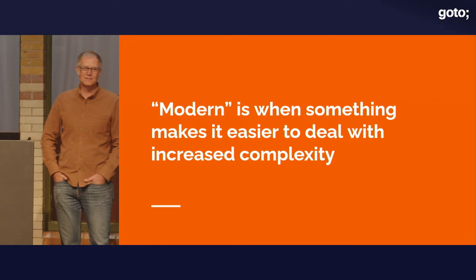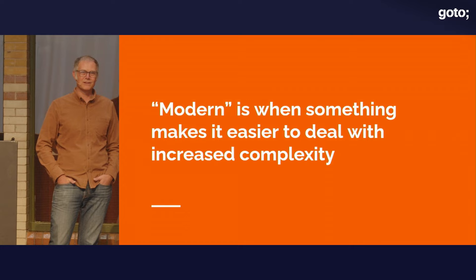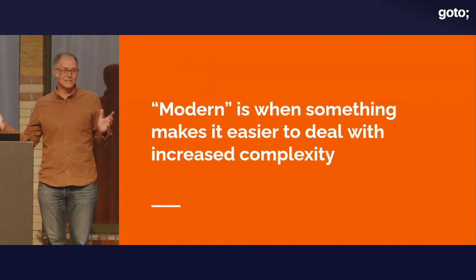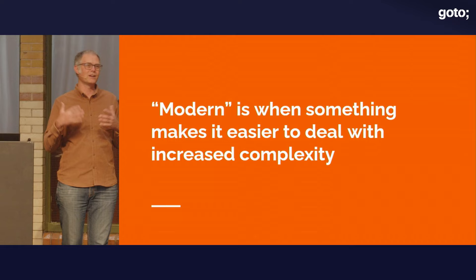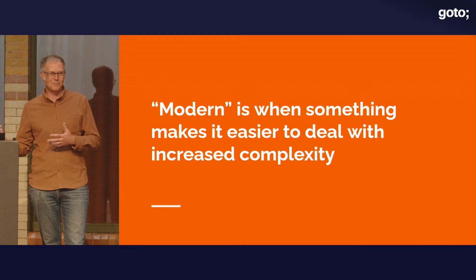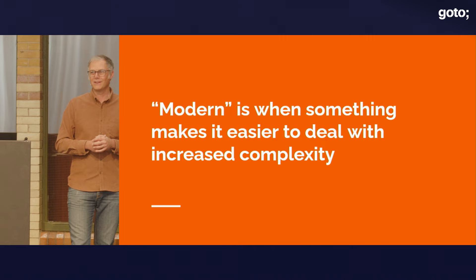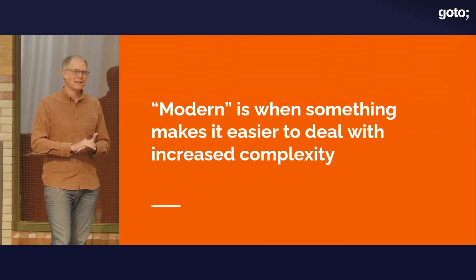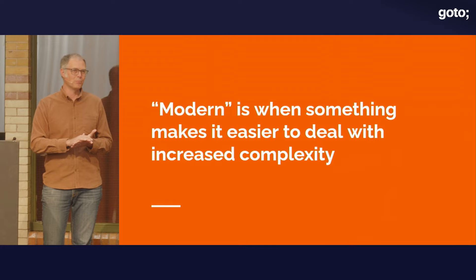So let's dive in. We've got a lot of code to show you, but before we get into some code, let's talk about what 'modern' means. The way I look at modern is that it's when something makes it easier to deal with increased complexity. In the systems that we build, complexity seems to always be growing — business requirements are always changing, technical problems continue to get more difficult, global scale, performance, data size. Things just keep getting more and more complex. Modern is the things that make it easier to deal with that increased complexity.